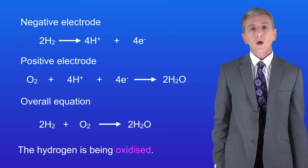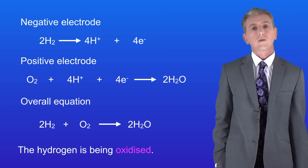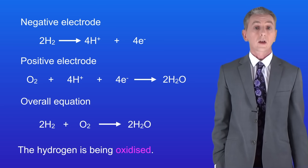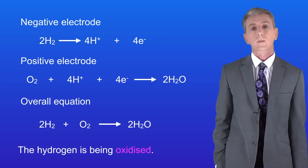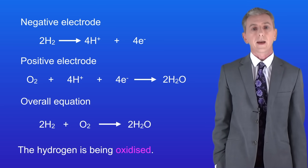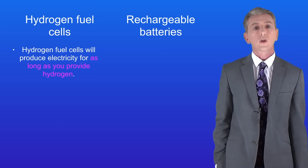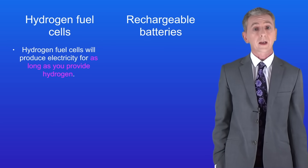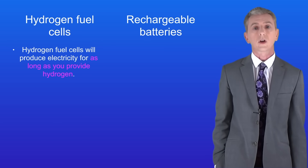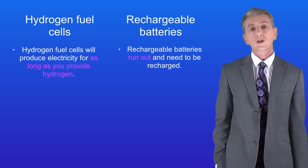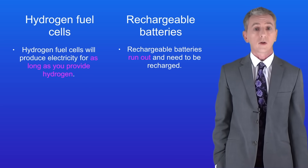So what are the advantages and disadvantages of hydrogen fuel cells compared to rechargeable batteries? The main advantage is that hydrogen fuel cells will produce electricity for as long as you provide hydrogen, whereas rechargeable batteries run out and need to be recharged.